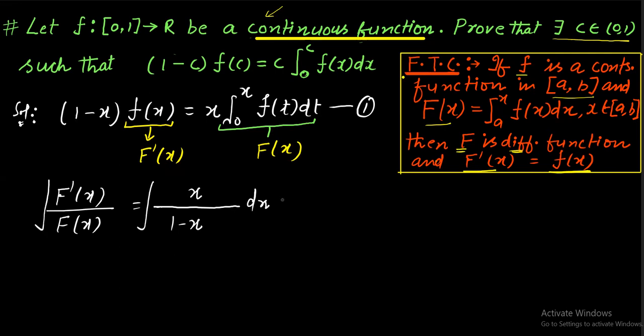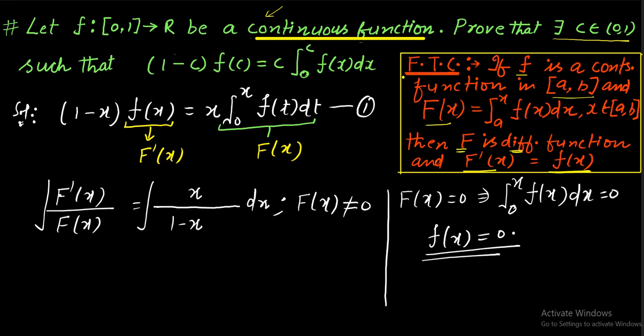Integrate both sides. Here again, students may have doubt. We are dividing with capital F(x). We can do this only if capital F(x) is not equal to 0. So, what happen if capital F(x) is 0? We have to take both the cases. If F(x) ≠ 0, we can divide. If F(x) equals to 0 for every x, this implies ∫₀ˣf(t)dt = 0. Therefore, function f(x) is identically 0 function. And if f(x) is identically 0 function, then equation number 1 will become identity and it will be trivial in that case. So, for capital F(x) equals 0, it is trivial. If not 0, we are dividing, integrating both sides.